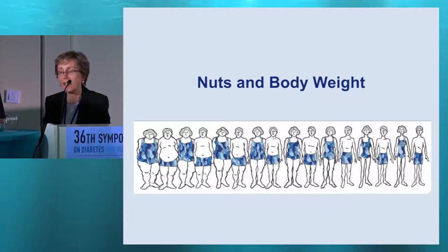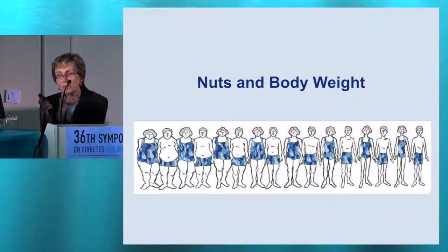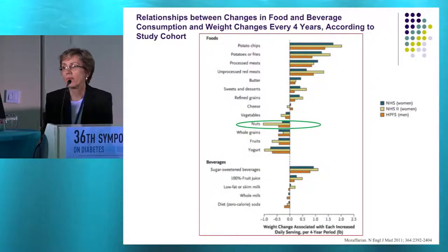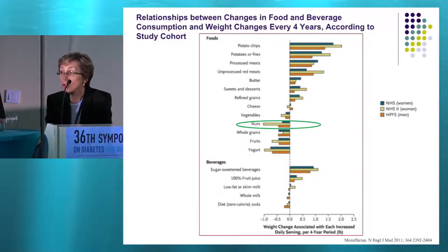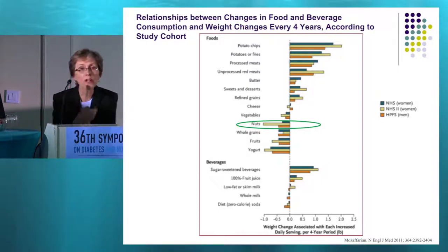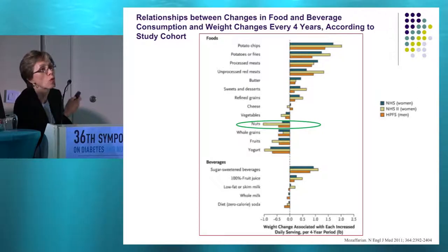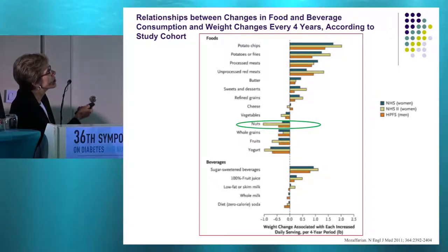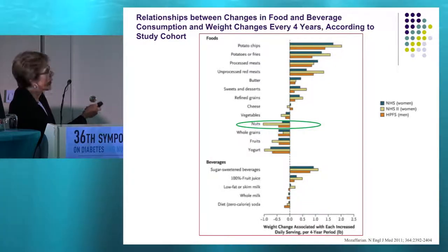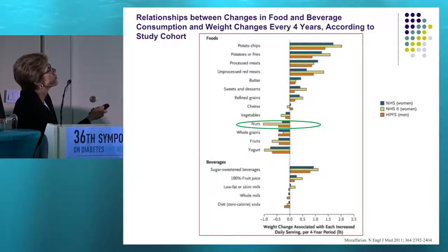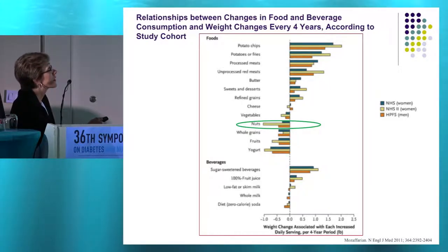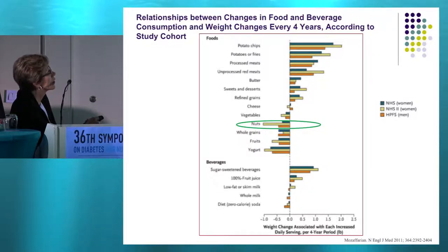Now let's turn our attention to nuts and body weight. This is a really interesting literature. A study published in the New England Journal of Medicine used data from the Nurses' Health Study, the Nurses' Health Study 2, and the Health Professionals Follow-Up Study. Over a period of four years, investigators looked at food and beverage consumption related to weight change. Certain foods are associated with an increase in body weight — potato chips, fries, processed meats, red meats, butter — but nuts are associated with a decrease in body weight, along with whole grains, fruits, and yogurt.